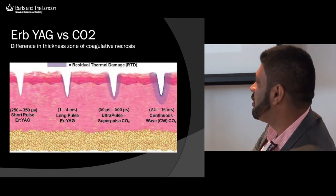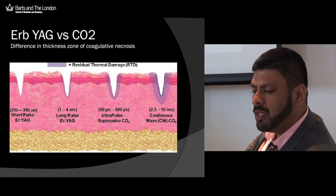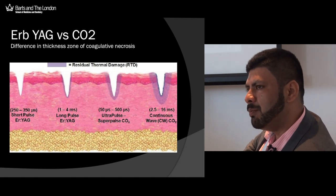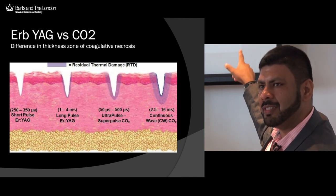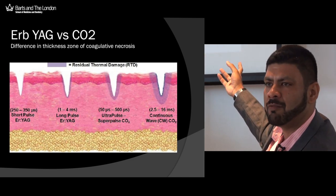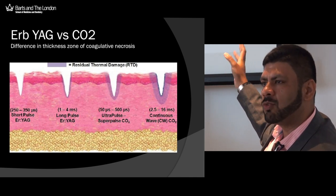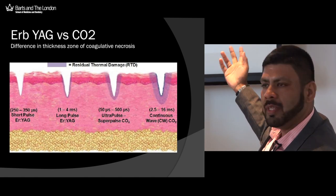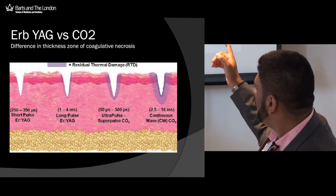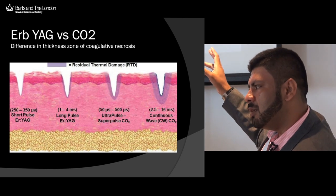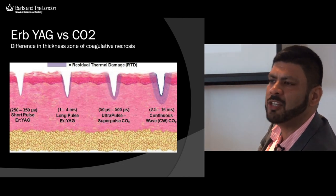Looking at histological slides: with an ablative erbium YAG laser, because it's so well absorbed by tissue water, you create a clean punch hole in the skin with limited thermal coagulative damage around it. That has implications for recovery — if you want an ablative treatment with lower downtime, you'd be better off using your erbium laser or fractional erbium device, because healing is much quicker and thermal damage to adnexal structures is much less. With the CO2 laser, it's much more coagulative than erbium YAG — you have a zone of coagulation around the punch hole measuring around 100 microns.